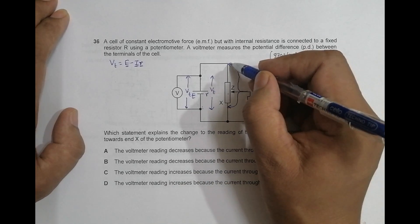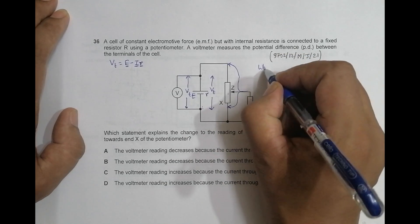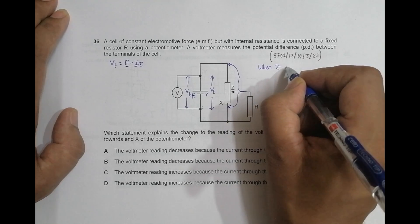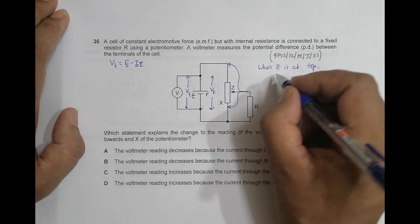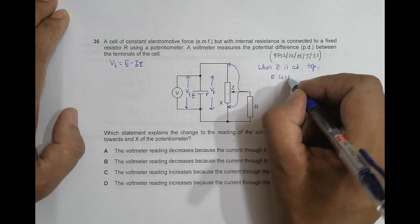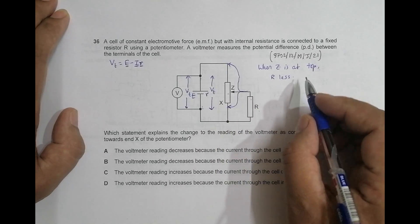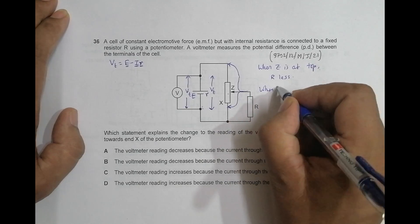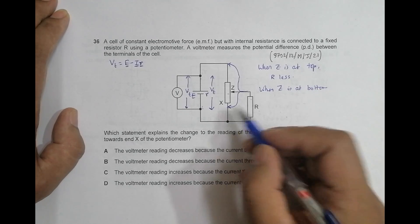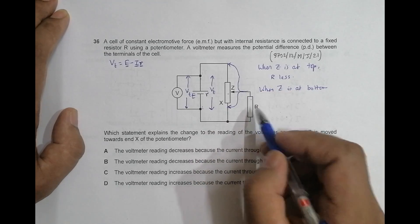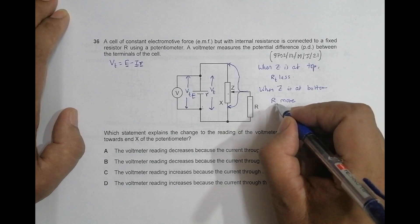When Z is at the top end we have two resistors in parallel, so the total external resistance R_outer will be less. When Z is at the bottom, the parallel branch is disconnected — there is only the one resistor — so R_outer will be more.